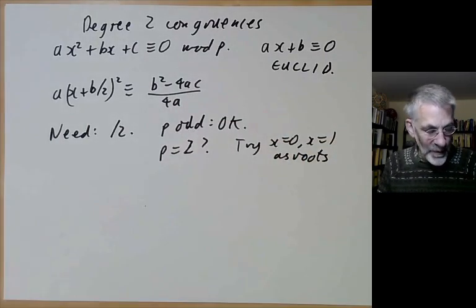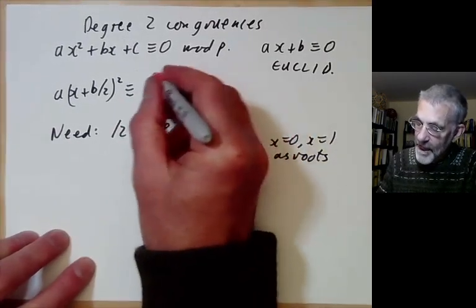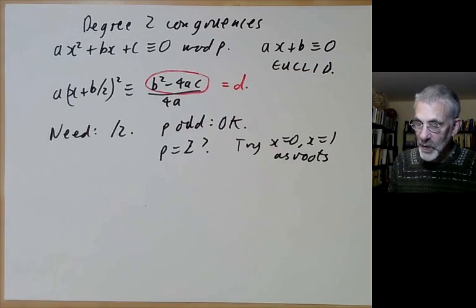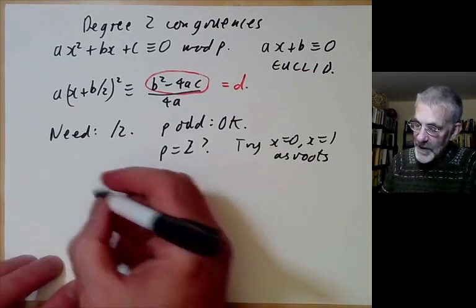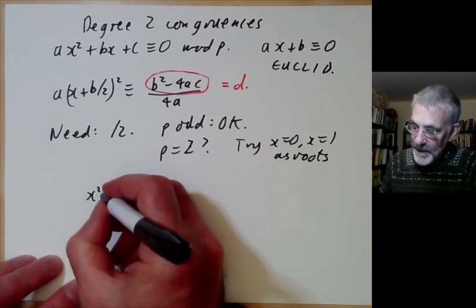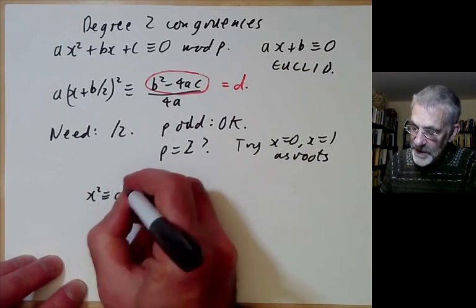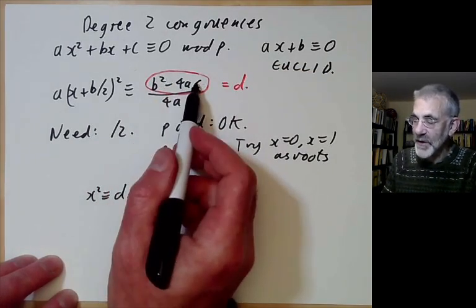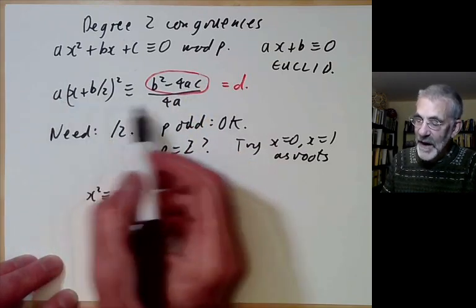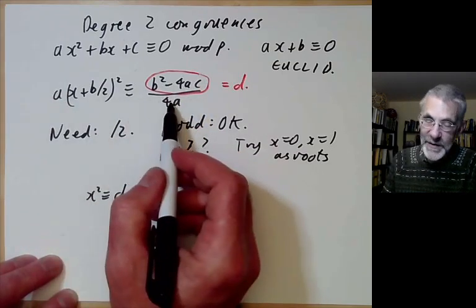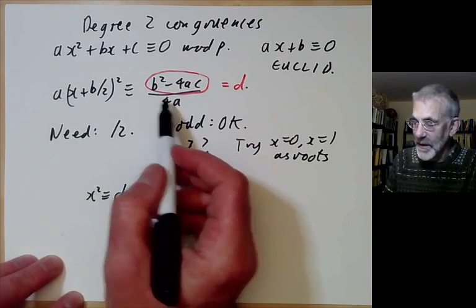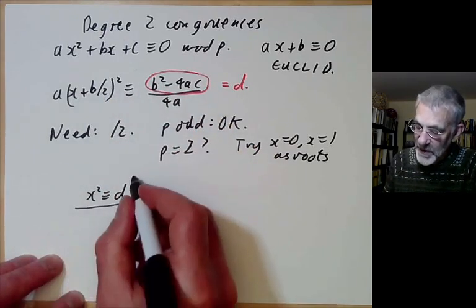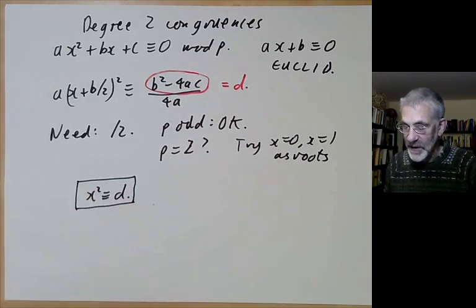This expression is just the usual discriminant of the quadratic equation. It's enough to solve x² ≡ d for d the discriminant, because if we can find the square root of the discriminant, then moving the 'a' gives a 4a² in the denominator, which is a perfect square. So we're reduced to solving this equation.